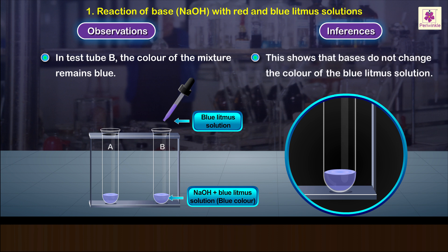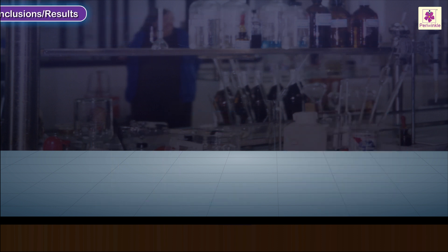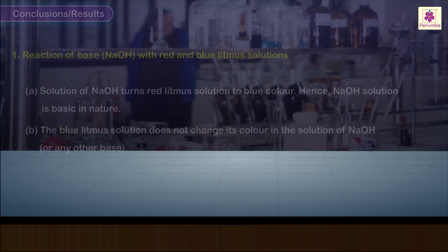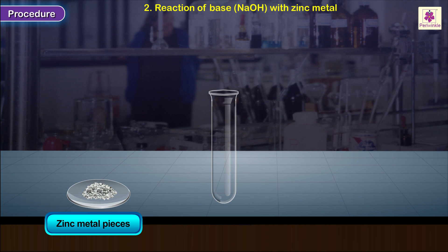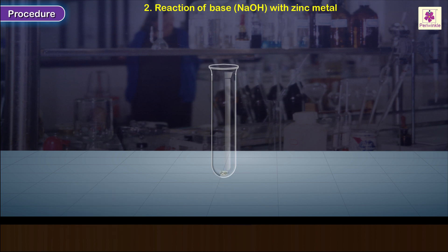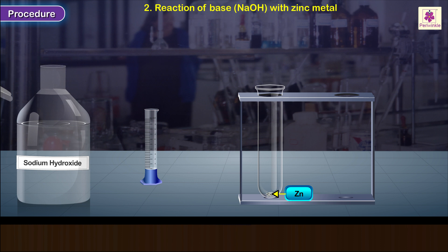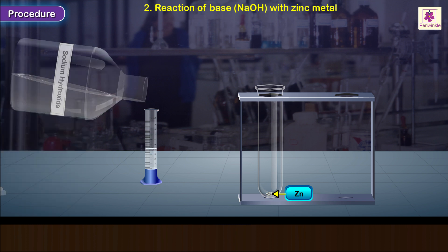Conclusions or results. Two: reaction with zinc metal. Take a few pieces of zinc metal in a test tube and place it in a test tube stand. Add some solution of sodium hydroxide to it.